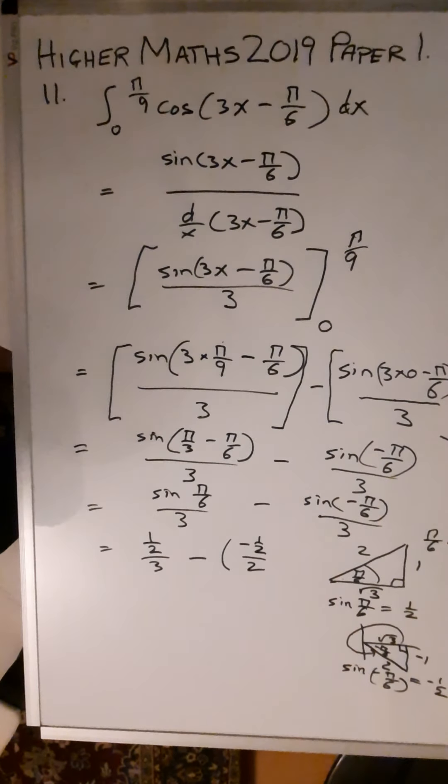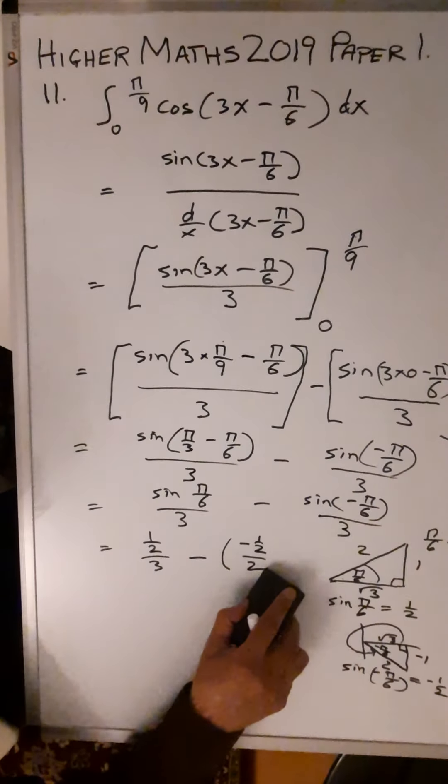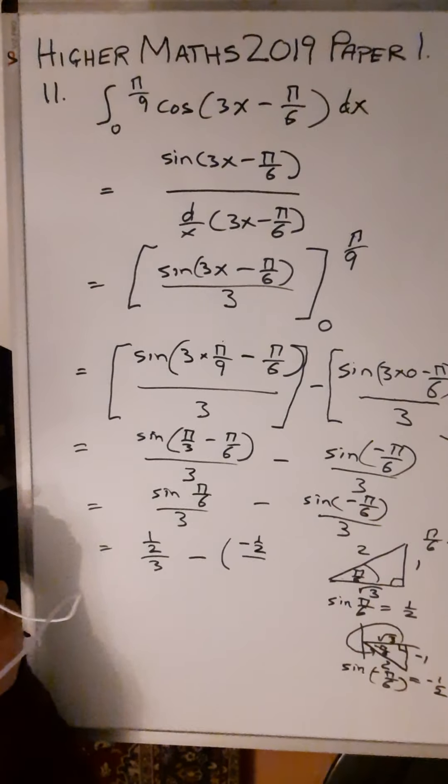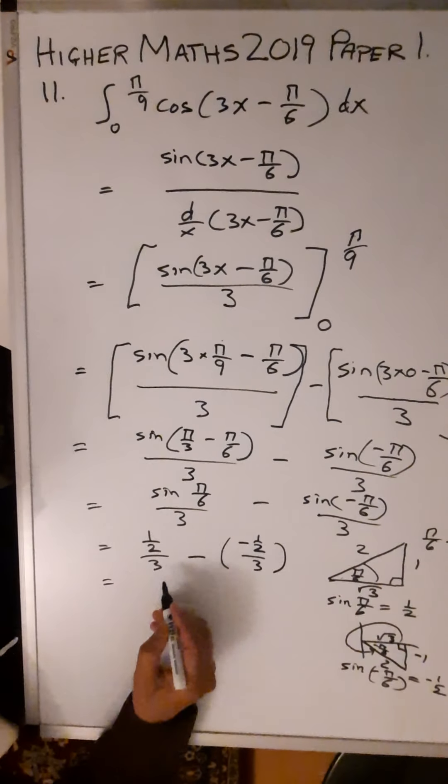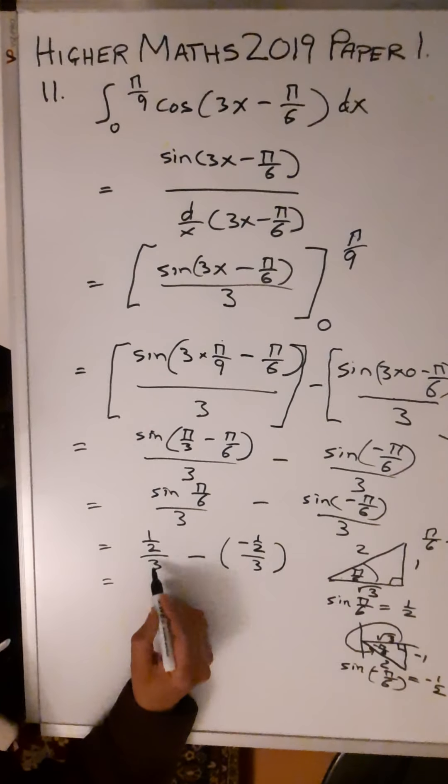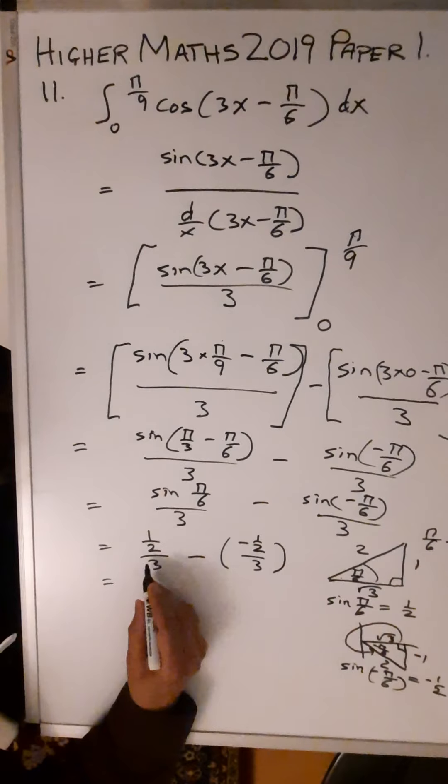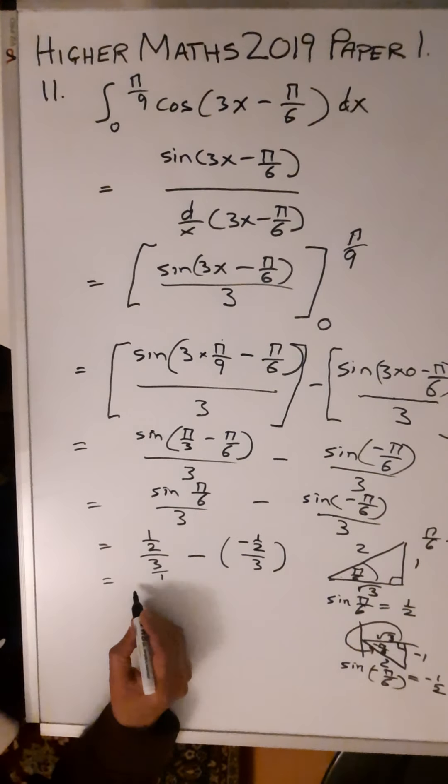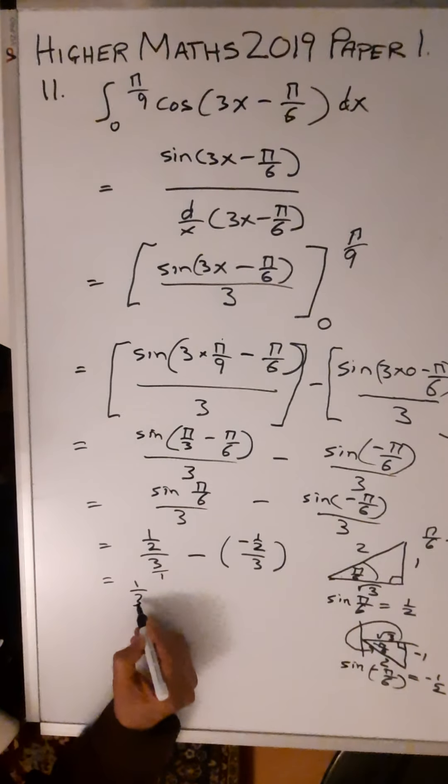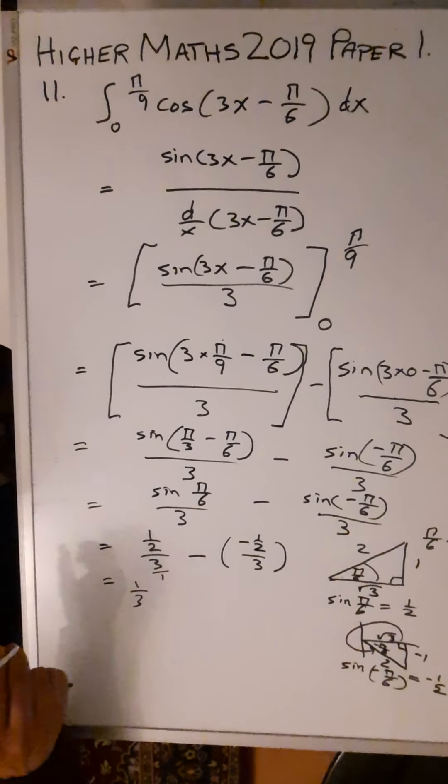So what you're ending up with: 1/2 divided by 3 is just—you can imagine there's a 3/1 down here, then you're turning it upside down—1/2 × 1/3.